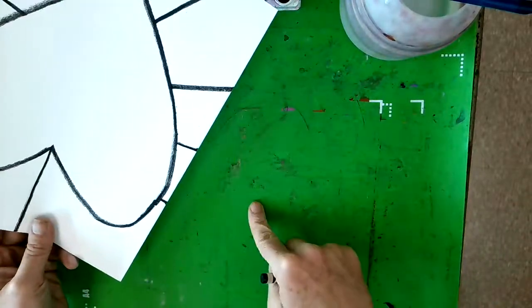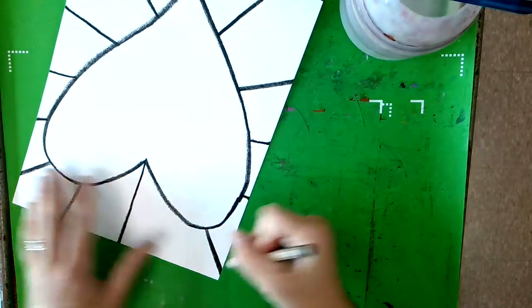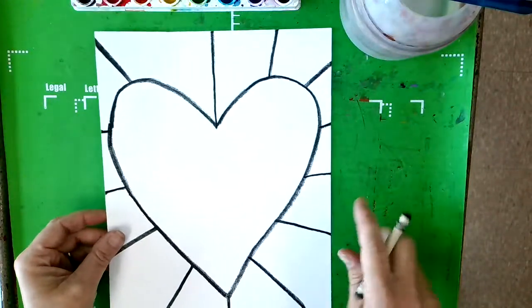Make sure when you make your lines that they come all the way off the edge of the paper. If you get a little bit of crayon on the table, it's no big deal. It'll wipe right off all the way to the edge. Okay, that's looking good.